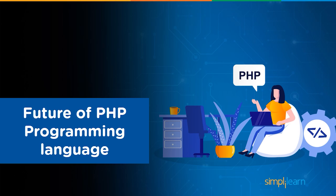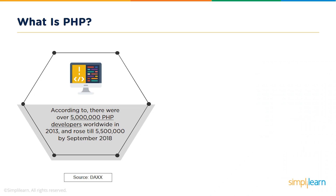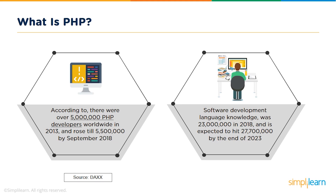Now, people who want to start their career in PHP must be curious to know what could be the demand of the scripting language in the future. According to DAX, there were over 5 million PHP developers worldwide in 2013, a figure which rose to 5,500,000 by September 2018. For comparison, the number of software developers worldwide, regardless of software development language knowledge, was 23 million in 2018 and is expected to hit 26,400,000 by the end of 2019 and 27,070,000 by the end of 2023.